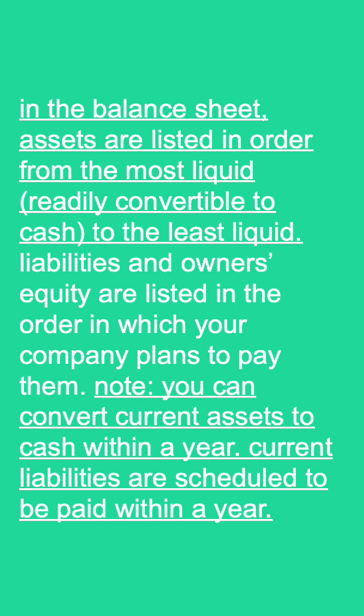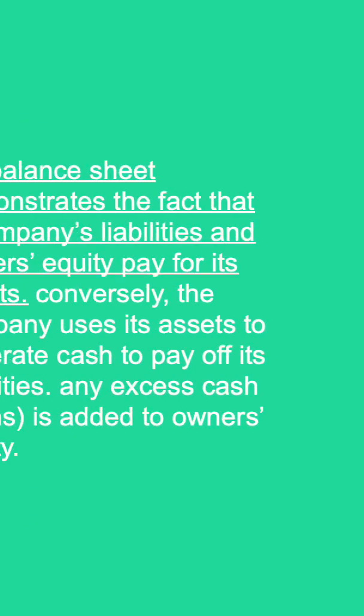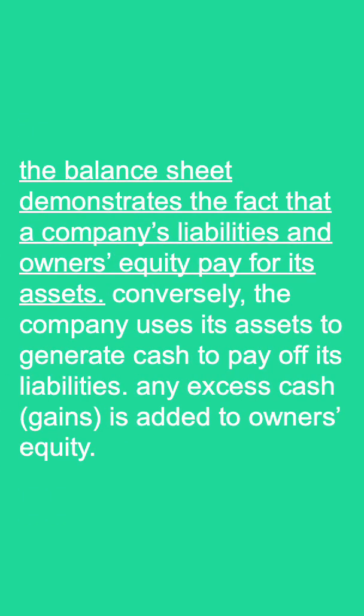from the most liquid — readily convertible to cash — to the least liquid. Liabilities and owner's equity are listed in the order in which your company plans to pay them. Note: you can convert current assets to cash within a year, and current liabilities are scheduled to be paid within a year.